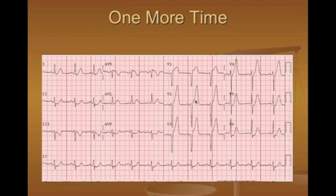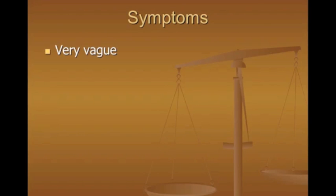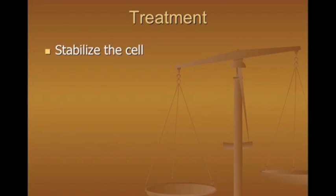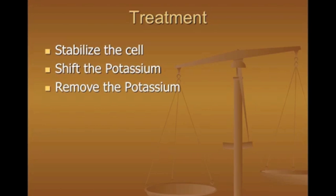Symptoms of hyper-K other than EKG findings are very vague: weakness, malaise, paralysis, lethargy. So hyper-K equals EKG — that's what we use. For treatment on your test, there are three steps: stabilize the cell, shift potassium from extracellular into the intracellular space, then remove potassium from the body. Use the mnemonic C-BIG-K-DROP: Calcium, Bicarb, Insulin, Glucose, K-exalate, Dialysis, Diuretics.